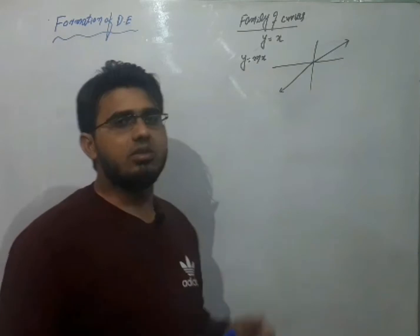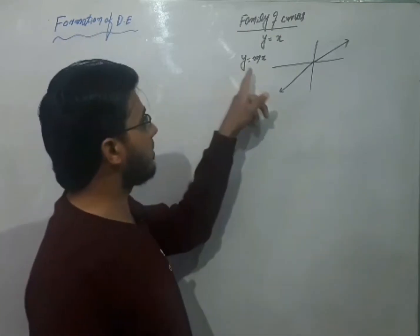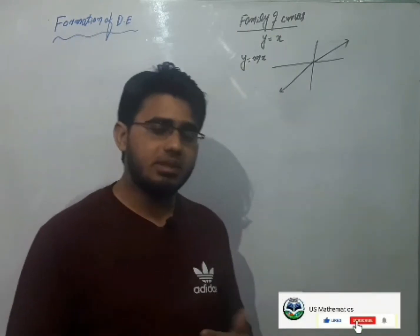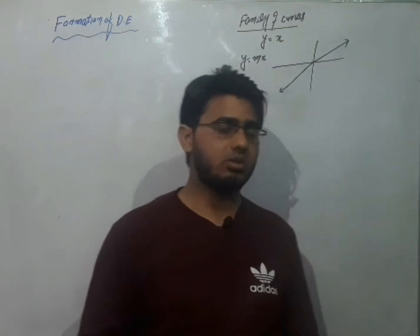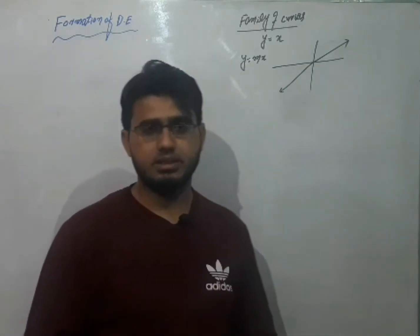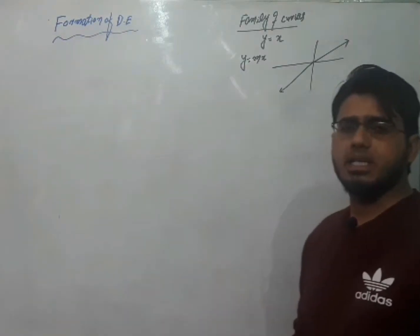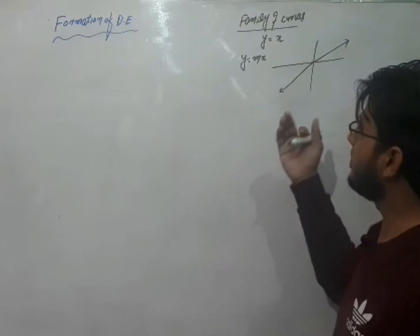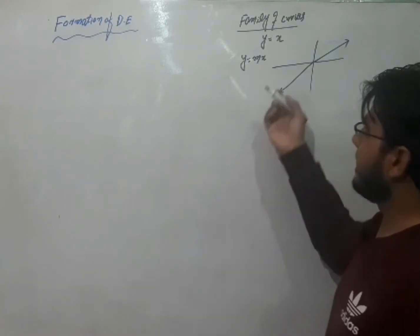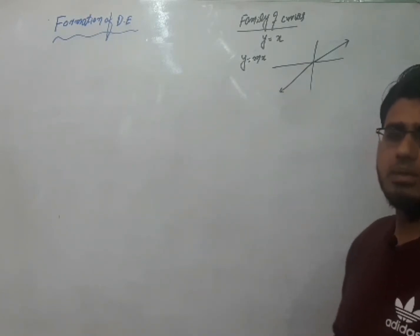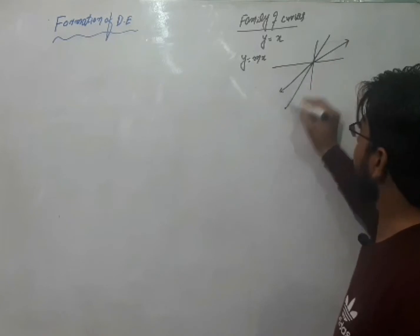अगर M की value 1 लेता हूँ तो Y is equal to X, अगर M is equal to 2 तो Y is equal to 2X. M को हम different values दे सकते हैं — M यहाँ पर एक constant है और इसकी value को हम change कर सकते हैं इसलिए हम इसको parameter का नाम देते हैं. अब यहाँ पर हमारे पास एक line नहीं बल्कि family of lines है.